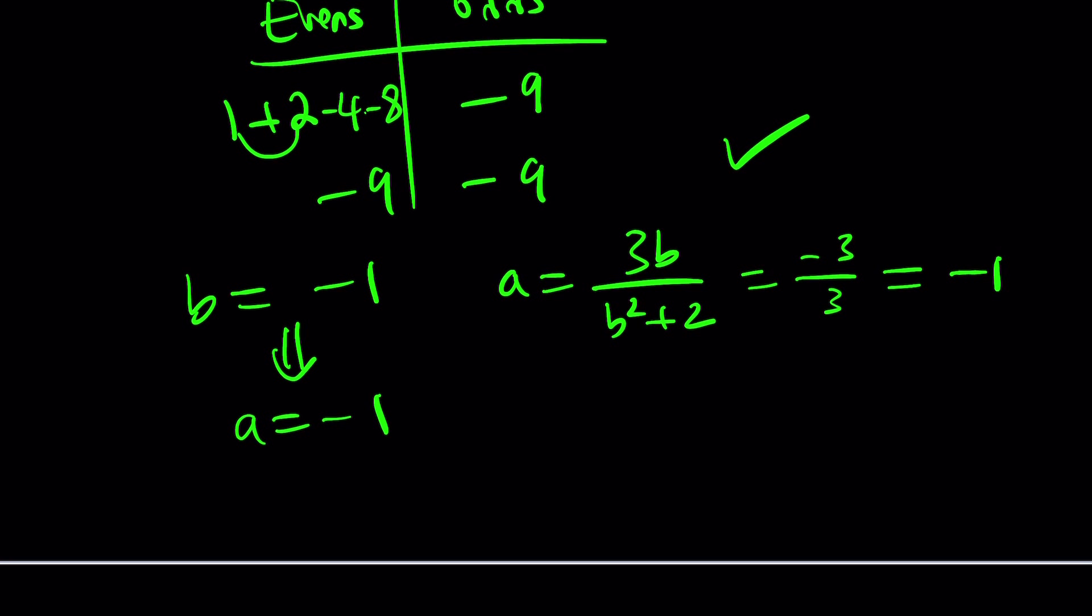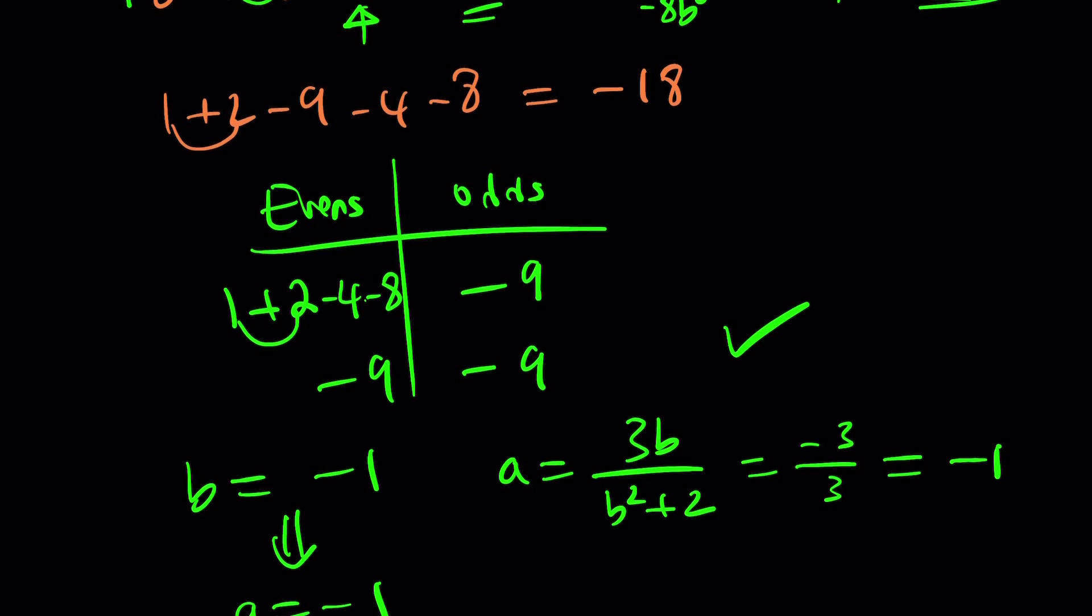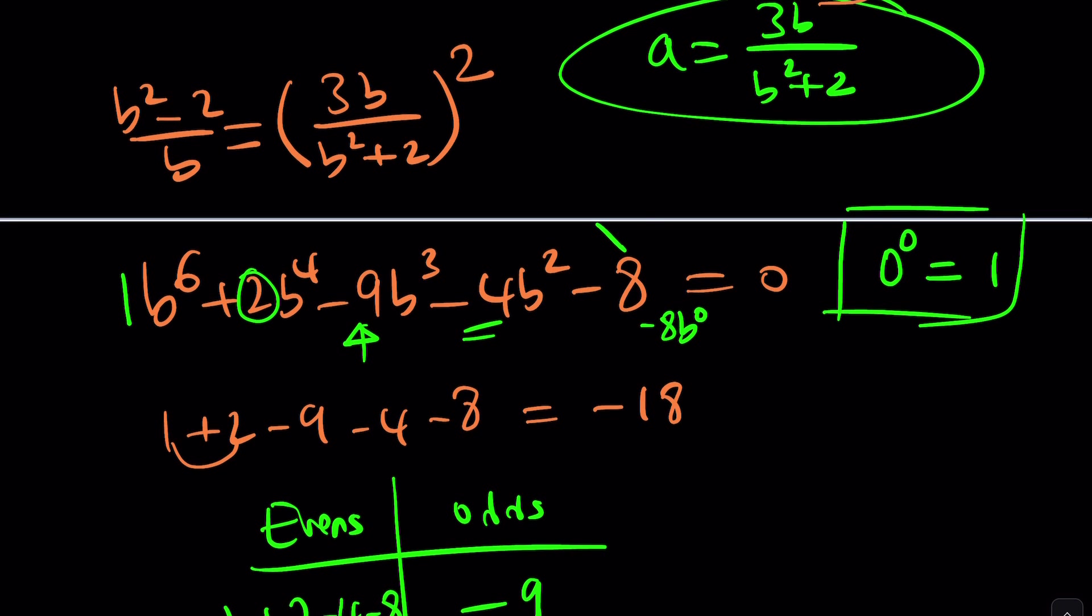Okay, great. But, wait a minute. Is b equals negative one the only solution? Probably not. So, let's go ahead and look for more. And, again, rational root theorem. I just couldn't remember for a second what it is. RRT could help.